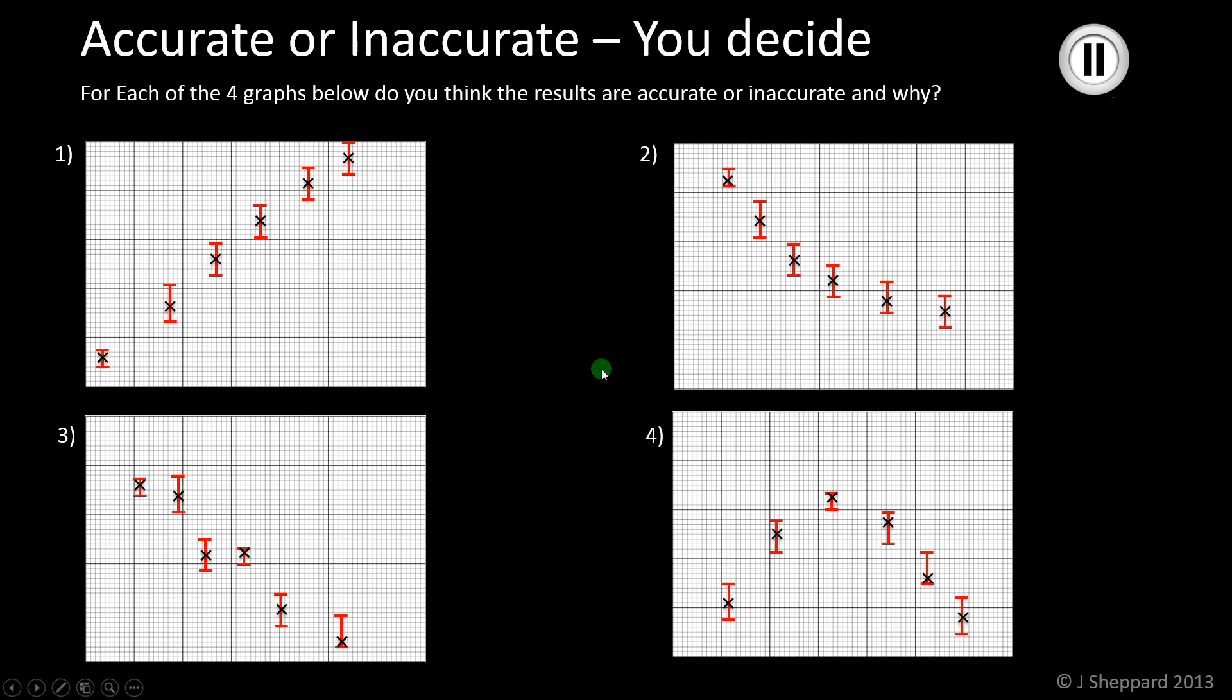Let's have a look at these. Graph number one, I would say is accurate, because you can put a nice straight line of best fit through, very close to the points, through the range bars. All the points lie close to the line of best fit, so it's accurate. Number two, it's a curve this time, but still, it's one smooth curve, goes through all the range bars, and fairly close to the points, so again, we'd say accurate.